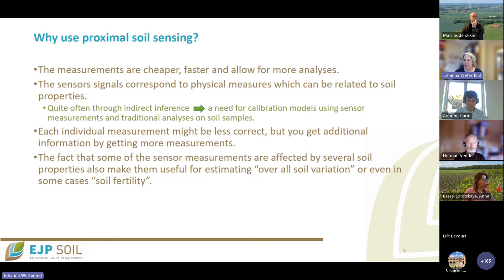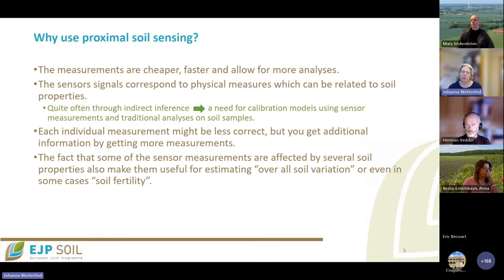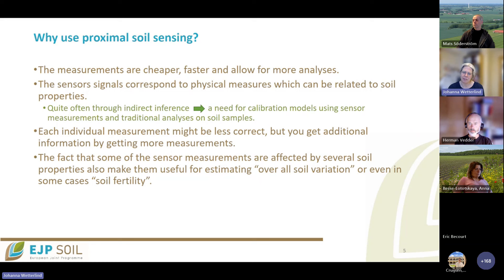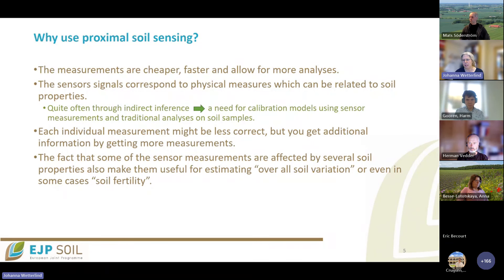Quite many of these sensors are affected by more than one soil property. This can be difficult if you want to predict a specific soil property, but it can also be useful if you want an overall estimate of soil variation. Some sensors are quite well correlated with soil fertility — correlated to yield maps, for example — so you can use the sensors for that too.